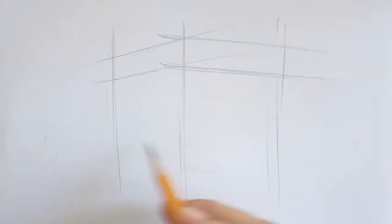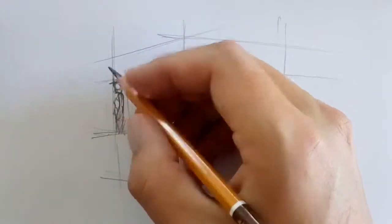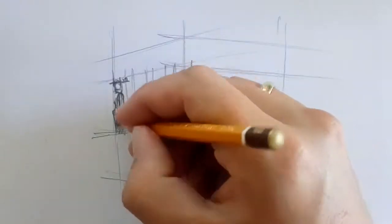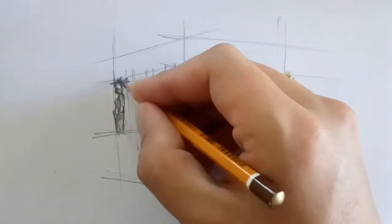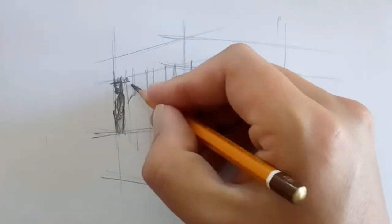I am starting to draw the Erechtheion. It stands on the Acropolis in Athens. This temple was built for Athena and Poseidon.